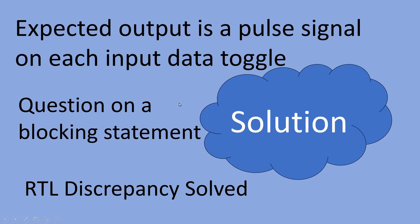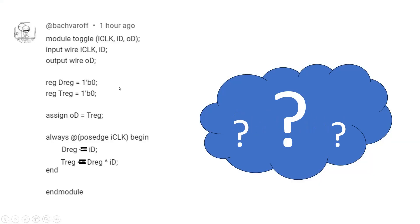Friends, this was the question. This was the RTL code given to you. Here I am using blocking statements and you have to tell me what is the expected logic diagram.